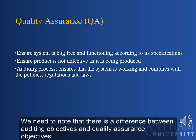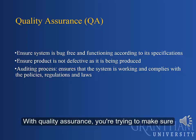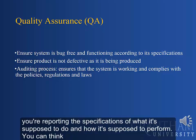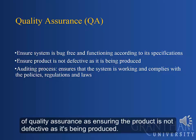There is a difference between auditing objectives and quality assurance objectives. With quality assurance, you're trying to make sure that the system is bug-free and functional according to the specifications of what it's supposed to do and how it's supposed to perform. You can think of quality assurance as ensuring that the product is not defective as it's being produced.